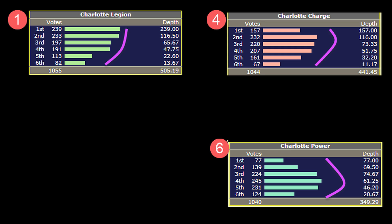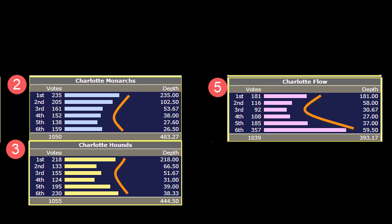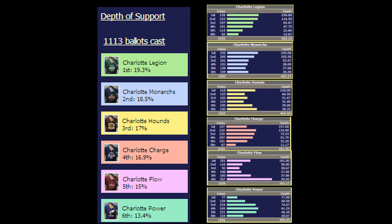Concave patterns indicate polarizing controversy, like these for Hounds and Flow. Depth of support explains why Charge placed higher than Flow, even though Flow has more first-choice votes.